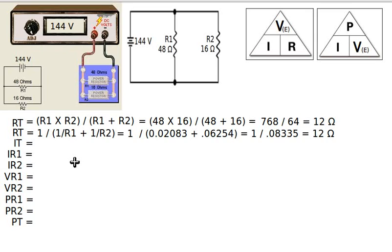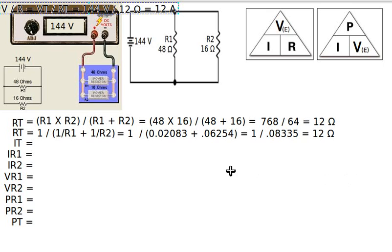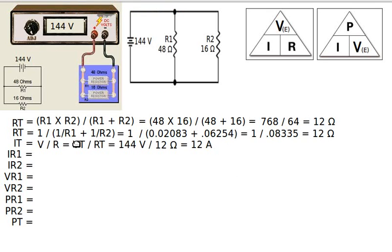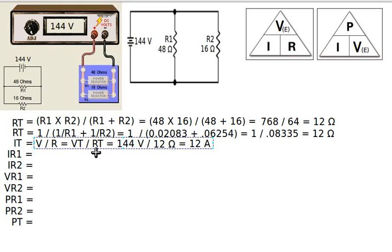Now let's find the total current. Now that I know the total resistance, we can find the total current using Ohm's law, which says current equals voltage divided by resistance. In this case, we use the total voltage of the power supply divided by the total resistance of the circuit: 144 volts divided by 12 ohms gives us 12 amperes.